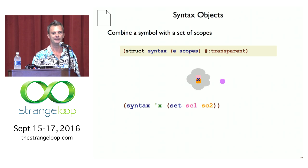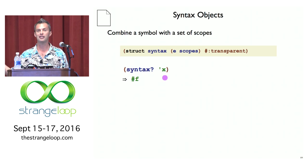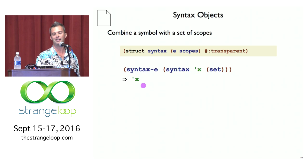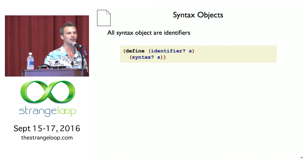The struct declaration also defines a few other handy things. Besides the syntax constructor, it makes a syntax? predicate — syntax? of a syntax object is true; syntax? on anything else like a symbol, number, or list is false. It also binds syntax-e as an accessor function that takes a syntax object and extracts the symbol, and syntax-scopes extracts the scope set.